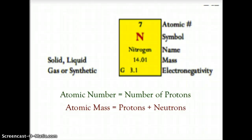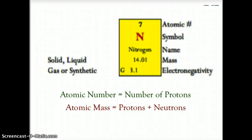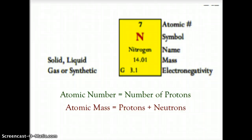The mass shown is called the average atomic mass. We'll talk about where that number comes from, but if you round it to a whole number, the atomic mass equals protons plus neutrons. There is also a number at the center bottom called the electronegativity, which we'll discuss in a later chapter — it relates to how each element bonds in different ways.